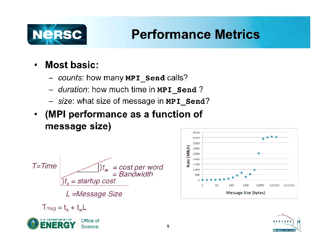When you start using these tools, there are three basic kinds of things you're going to want to measure — three questions you want to ask: how many, how long, and how much. Those are basically the types of data you can get out of performance tools. I've given examples here from the MPI library — from an MPI send routine. You can ask: how many calls of that type did I have in my code? How much time was spent in them? What was the duration? And what size of message was sent? These are all indirect measures of performance, but are nevertheless important for understanding how well your code is mapped to the architecture.